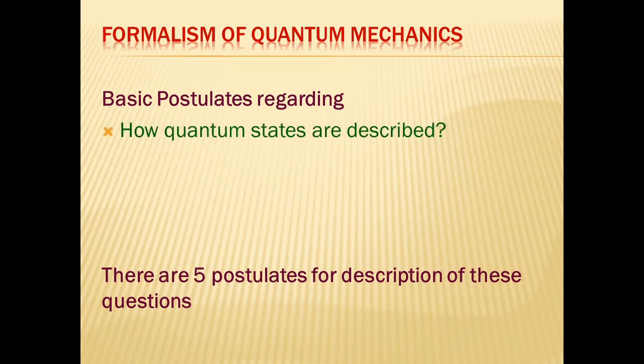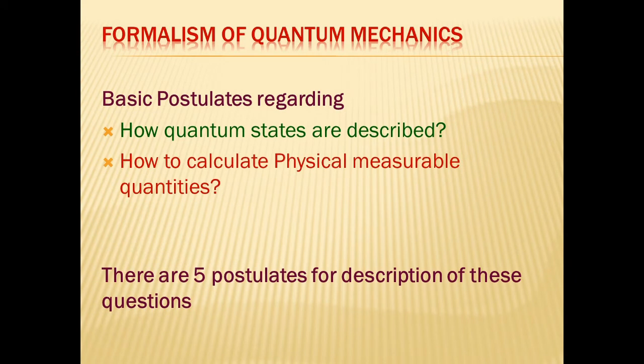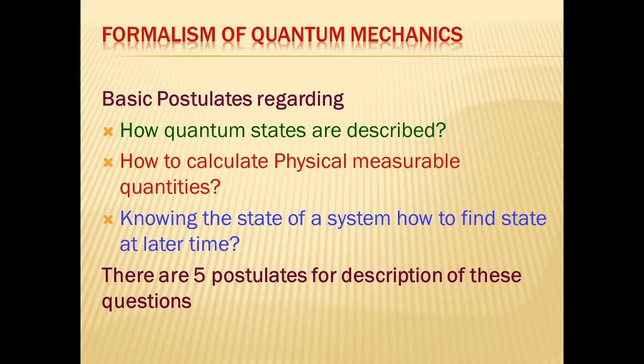Using the basic postulates, we will answer: how quantum states are described; how to calculate physically measurable quantities; and knowing the state of a system, how to find its state at a later time. To answer these three questions there are five postulates of quantum mechanics, which we will discuss in this unit.